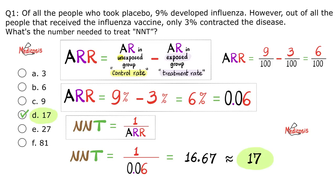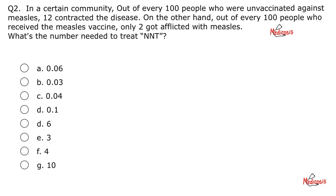Pause and review. You can do the subtraction like this: 9 out of 100 minus 3 in 100 equals 6 in 100 or 0.06. Then you flip 6 out of 100 into 100 divided by 6, which gives you 17.